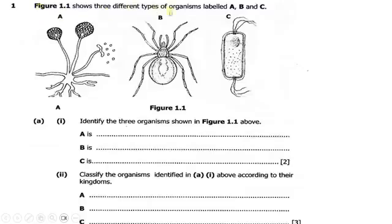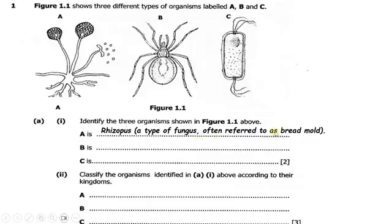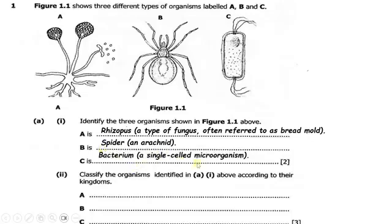So let's start answering. Organism A is a Rhizopus — a type of fungus often referred to as bread mould. Organism B is a spider, also called an arachnid. Organism C is a bacterium, a single-celled microorganism.